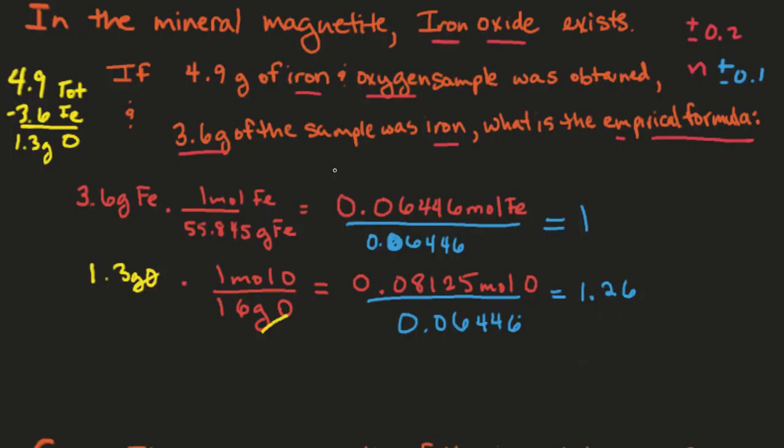So then we do 1.26 times 4, and we get 5.04. So because times 4 was the magic number that worked, we did times 4 here. And that gave me 5.04, which is within the allowable range of plus or minus 0.2 of a whole number.